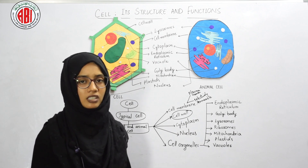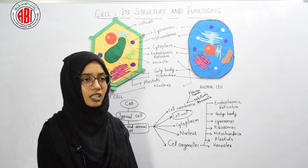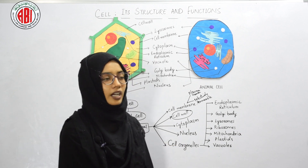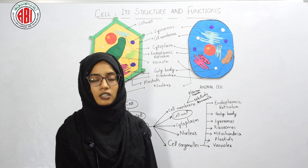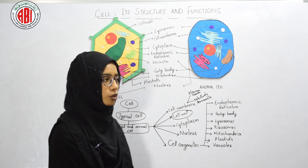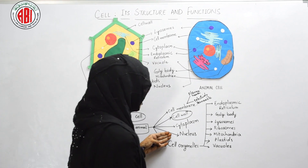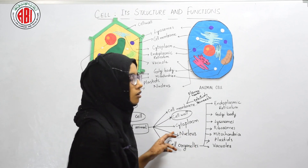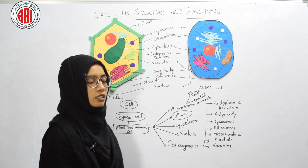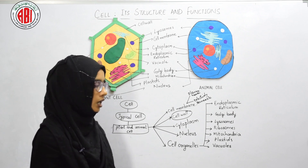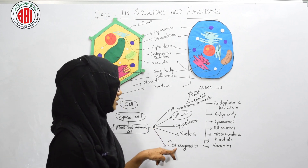The nucleus is a very important, dark body of the cell. It contains the genetic material called DNA in the nucleoplasm, which is a fluid within the nucleus. The nucleus helps in transferring genetic information and controls all other cell organelles; therefore it is called the controller or head of the cell.